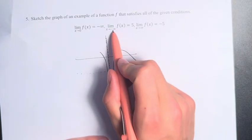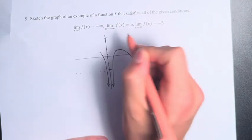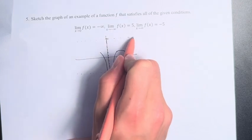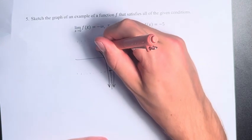We also have the limit as x approaches negative infinity is equal to 5. So positive 5 would be up here, another horizontal asymptote, and it would go off like this.